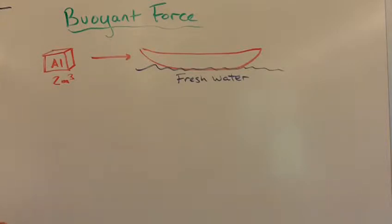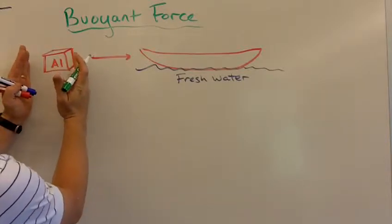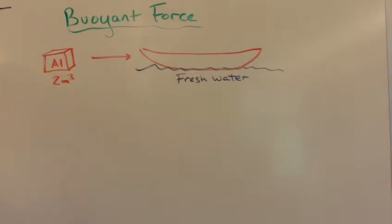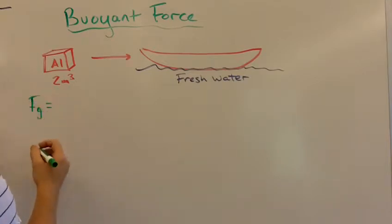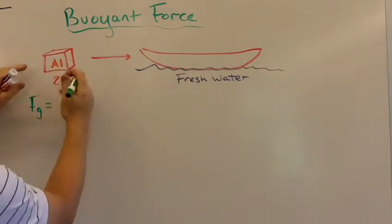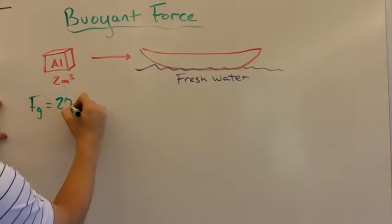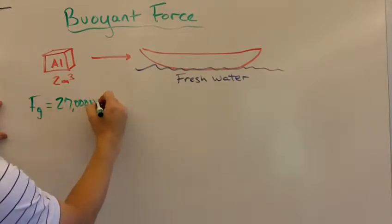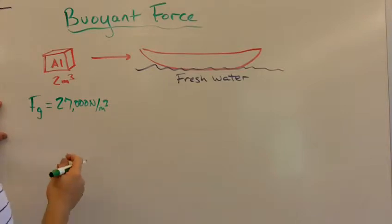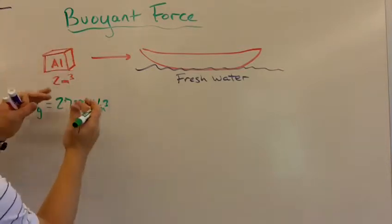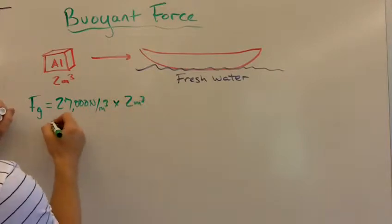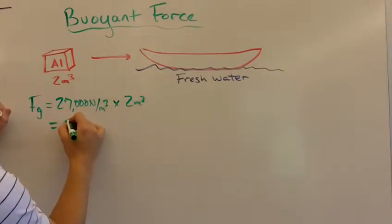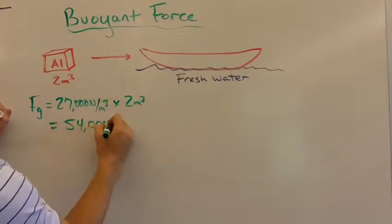Alright, so the first step we would have to do is say, well how much would the canoe weigh if we used all two cubic meters in order to build it? And the weight of the canoe would be the weight density of aluminum, which is 27,000 newtons for every cubic meter of aluminum. Each box that size weighs 27,000 newtons. And we have two cubic meters of that. So the overall weight of this thing would be 54,000 newtons.